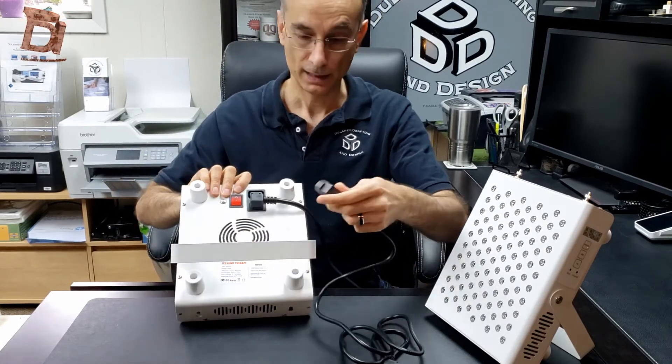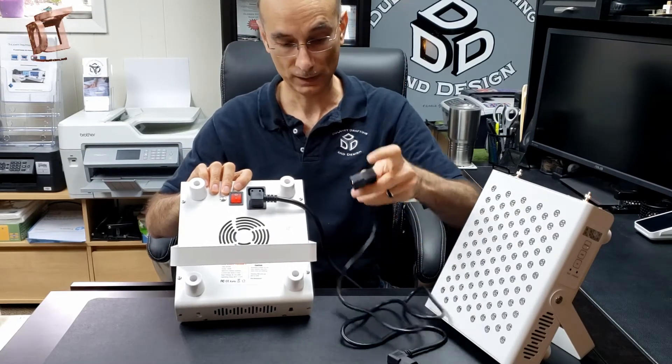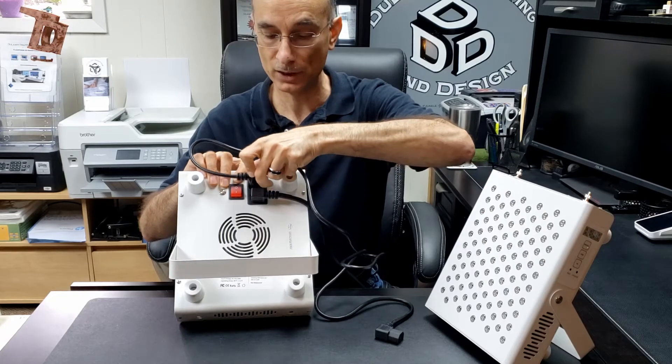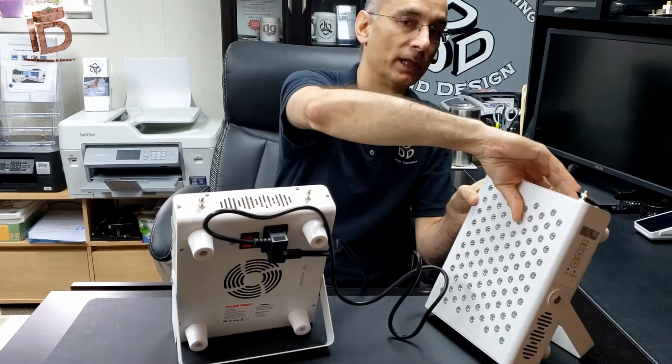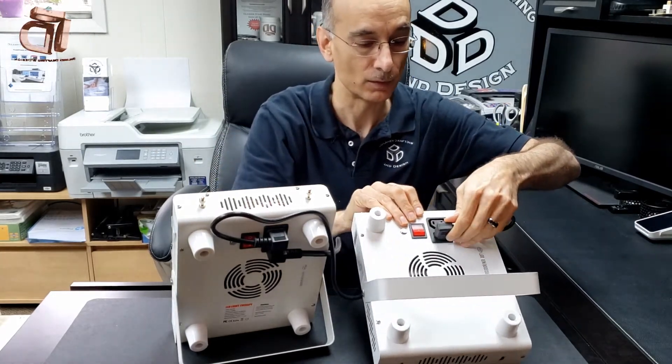I'm going to take the daisy chaining power cord and first connect this end into the daisy chain power cord port here and then the other end I'm going to plug into the main power cord input right here.